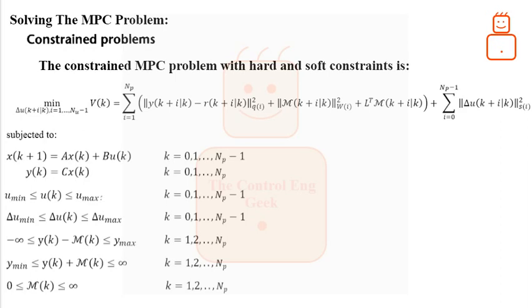This cost function is subjected to some constraints as shown. The first constraint is the process dynamic which is given in the form of state space. The second constraint is